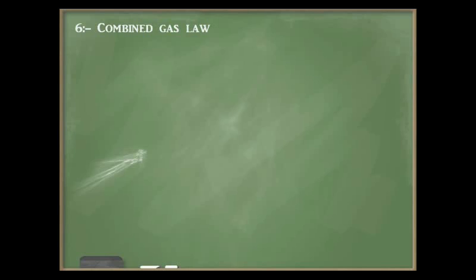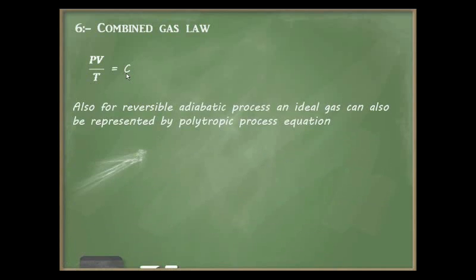Next is the combined gas law, which combines Charles' law, Boyle's law, and Gay-Lussac's law. It is given by PV/T = constant. Also, for a reversible adiabatic (isentropic) process, an ideal gas can be represented by the polytropic equation PV^n = c, or PV^γ = constant, where γ is the ratio of specific heat at constant pressure to specific heat at constant volume (cp/cv).